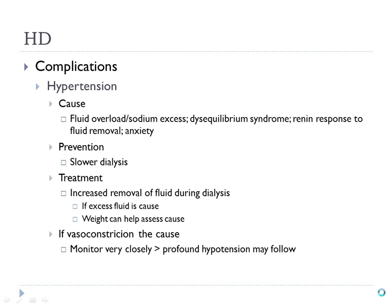The patient also has a risk of hypertension during dialysis, mainly caused by the renin response. When the body becomes more fluid-deficient, the renin-angiotensin system kicks in naturally. The end result is vasoconstriction and blood pressure rising because of angiotensin II. This is prevented by slowly removing fluid — slower dialysis.